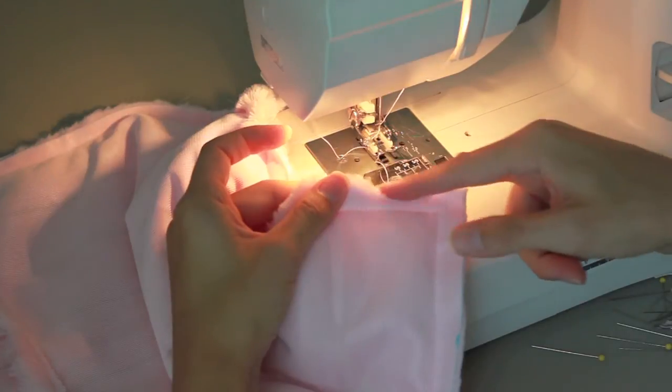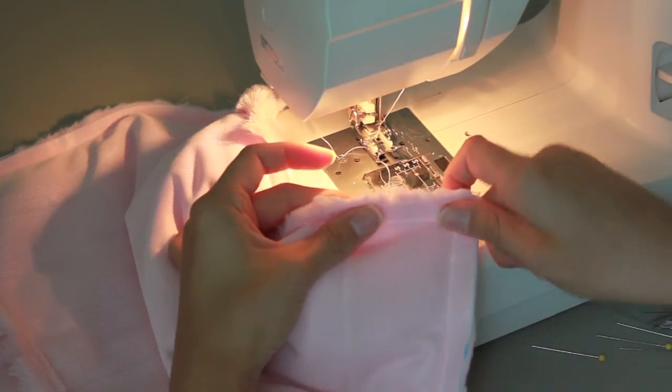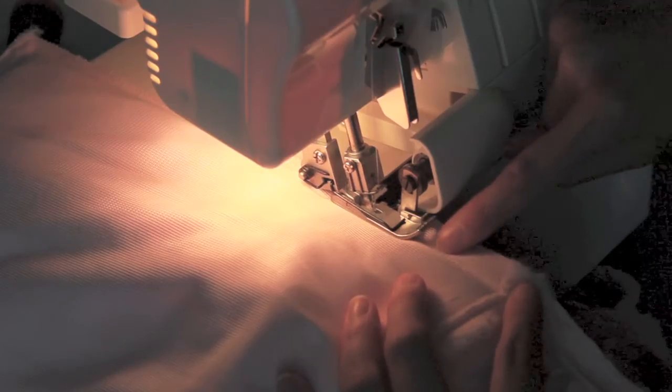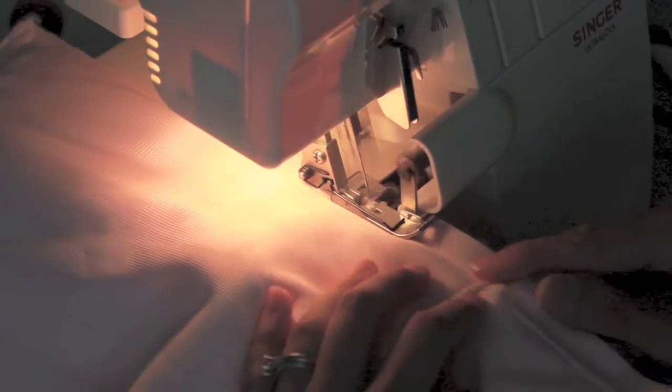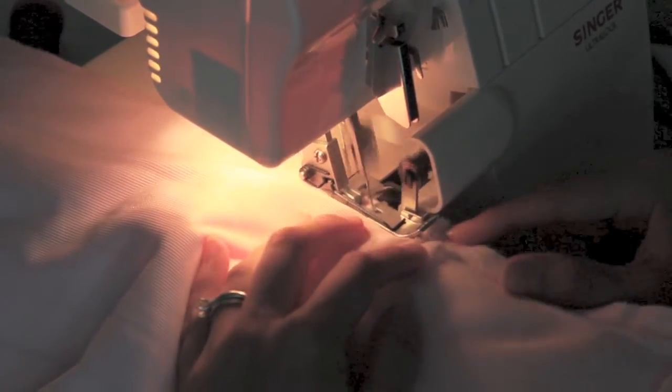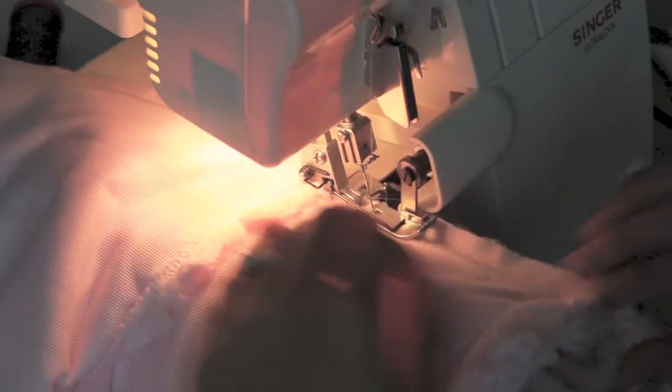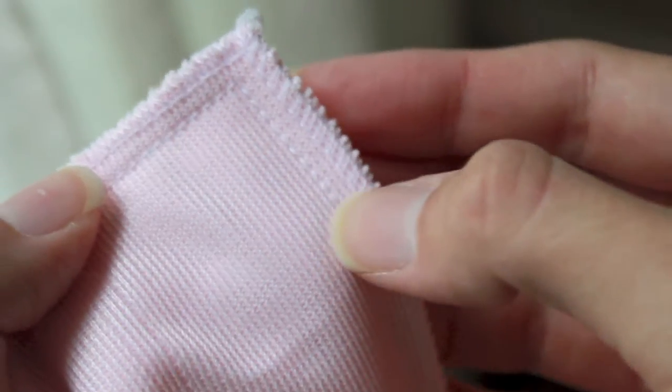Now I'm going to head over to my serger and serge these edges so that they have a nice finished edge and easy for washing. I'm going to use the foot on my serger to line it up with that straight stitch and then that way it's nice and even all the way around. If you don't have a serger that's fine. You just want to zigzag your edge really well.